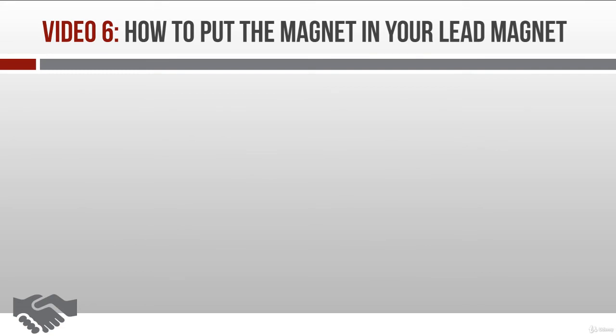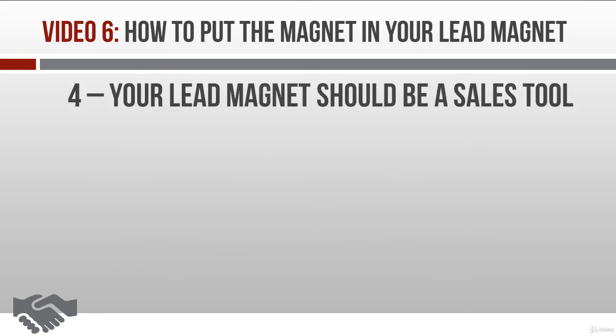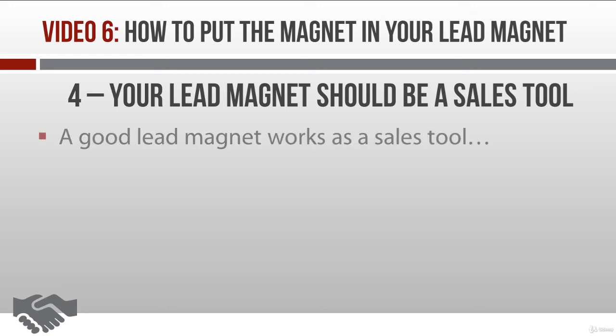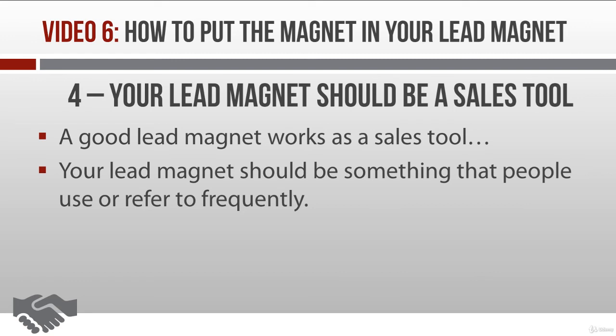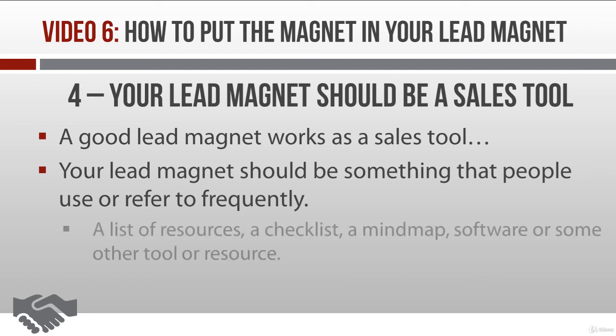The fourth tip for attracting prospects is to create a lead magnet product that works as a sales tool. The whole reason for your lead magnet product to exist is to attract people to your site and get them on your mailing list. But a good lead magnet also works as a sales tool, and a good sales tool has these two characteristics. First, ideally your lead magnet should be something that people use or refer to frequently — a list of resources, a checklist, a mind map, software, or some other kind of tool or resource. These things work well because people use them often, and that means they're going to see your calls to action often as well.